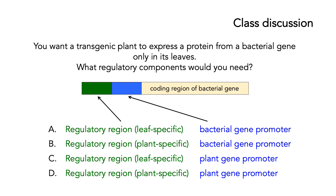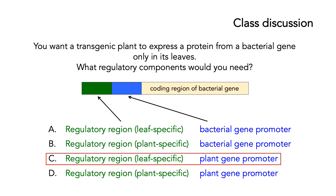Here's a class discussion. Imagine that you want a transgenic plant to express a protein from a bacterial gene only in its leaves. What regulatory components would you need? You've got regulatory regions that are either leaf-specific or plant-specific, and you've got gene promoters — basically switches that turn the gene on or off — either the bacterial copy or a plant copy. The correct answer is C: you need the regulatory region that is leaf-specific and the plant gene promoter.